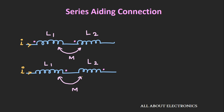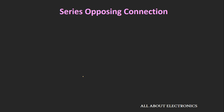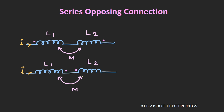In the earlier video on dot convention, we had seen the expression for a series connection of mutually coupled inductors. When two mutually coupled inductors are connected in a series-adding connection, their equivalent inductance is L1 plus L2 plus 2M, where L1 and L2 are self-inductances and M is the mutual inductance. Similarly, when connected in a series-opposing connection, the equivalent inductance is L1 plus L2 minus 2M. Let's derive the expression for both cases.